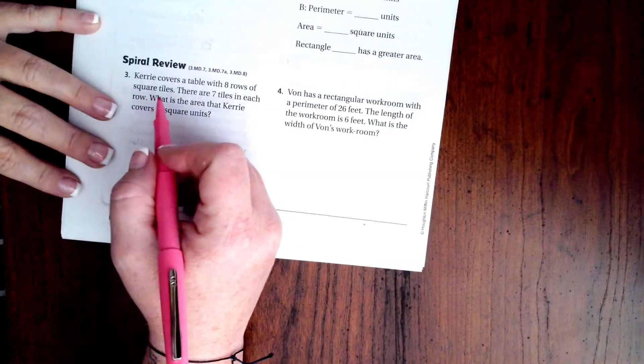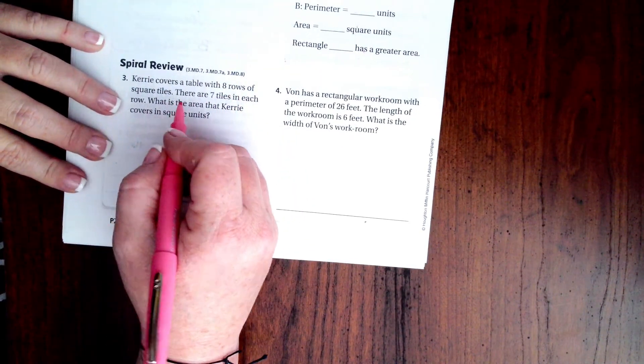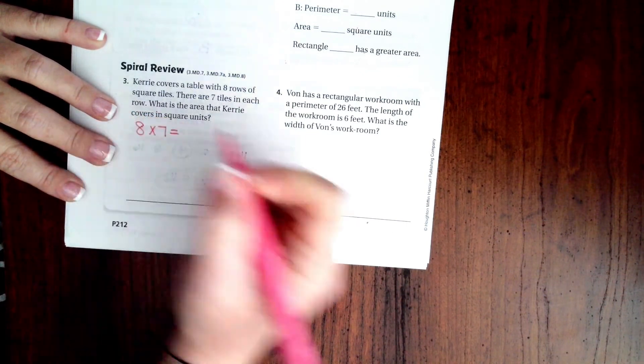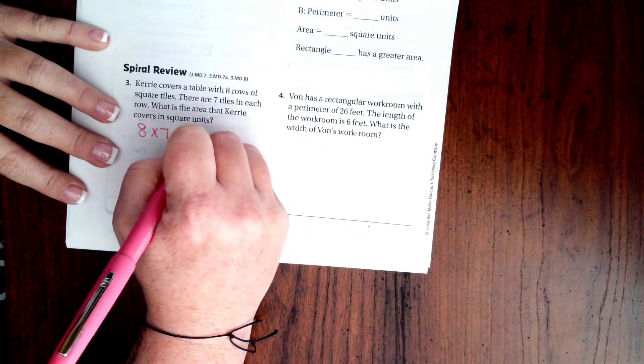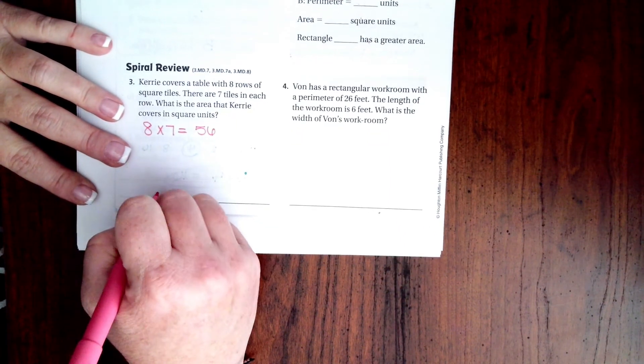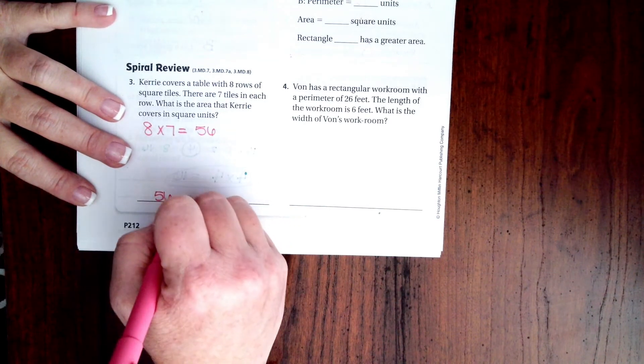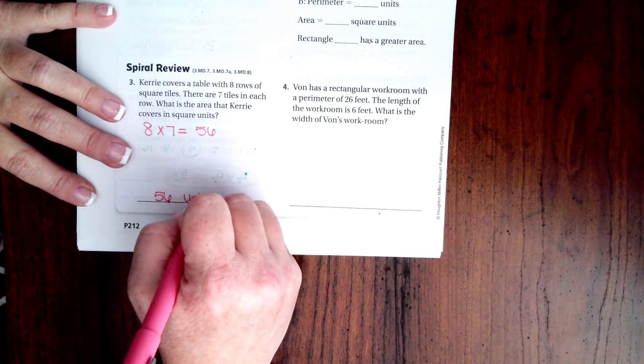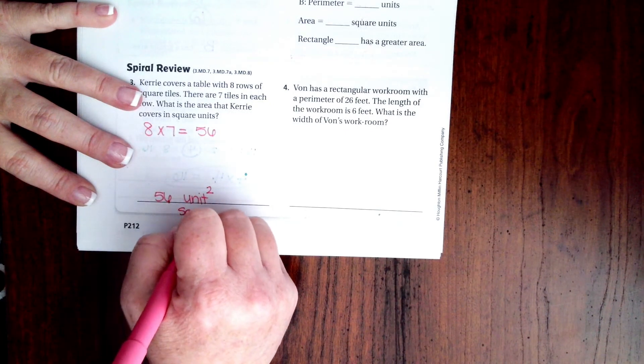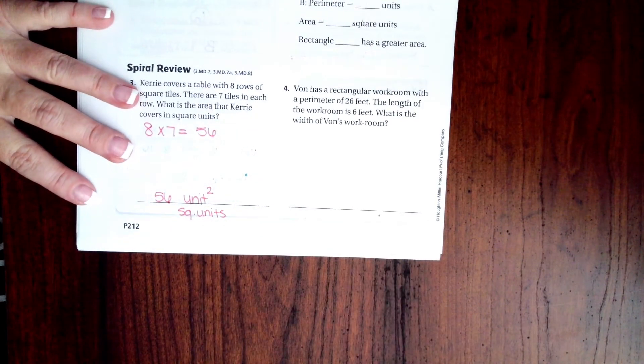So, number 3 says that Carrie covers a table with 8 rows of square tiles. There are 7 tiles in each row. What is the area? Well, 8 times 7 is 56. So, 56, and it's just units. Now, it can be units squared, or you can put square units, or you can write out square units. Your choice. Okay?